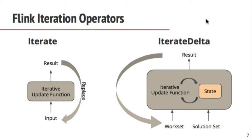First of all, as Theo already mentioned, Flink has native iteration support. What that means is that iterations in Flink are just another special kind of operators. The scheduler does not have to schedule a new job every time you need to iterate over your data. It can do a lot of optimizations because it's aware that it's running an iterative job. We have two iteration operators in Flink. One is a simple one called iterate — you give it a data set, apply a step function, get a new data set, and feed it back to the input.